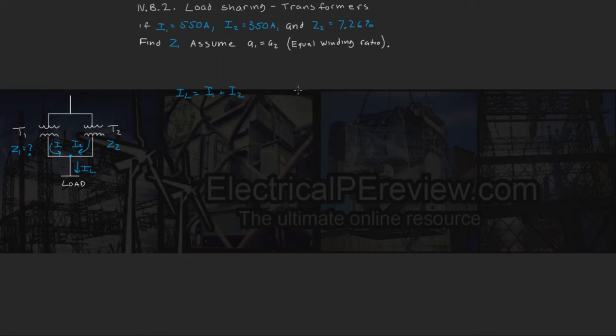We can use Ohm's law to say current is equal to voltage over impedance, and since the turns ratio are equal, our V1 is going to equal V2, or simply put, both will equal V.